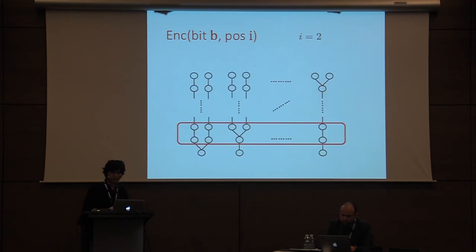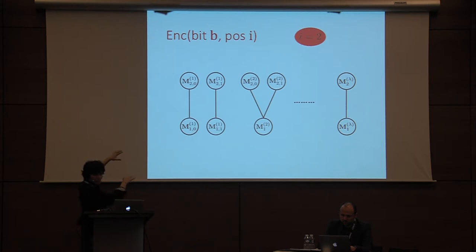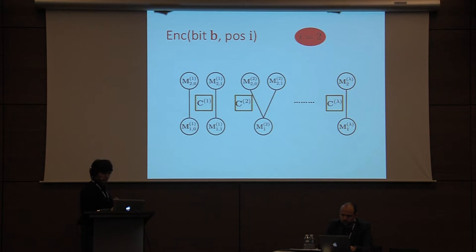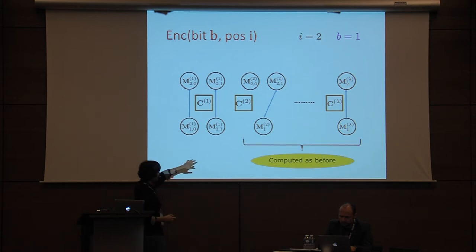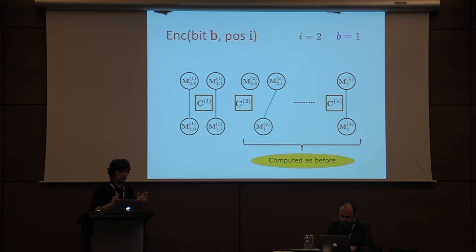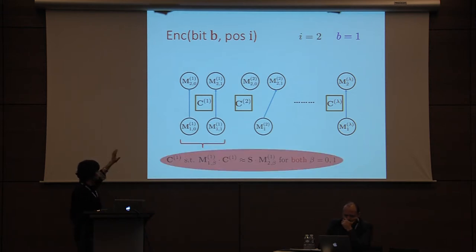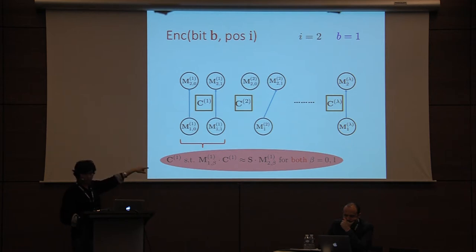For position two, we focus on level one and level two matrices. We again want to output lambda short matrices C1 through C-lambda as part of the ciphertext. Suppose we want to encrypt bit B; we want the Ci matrices to encode the relation taking level-one matrices to level-two matrices via the indicated transitions. We compute lambda minus one short matrices C2 through C-lambda as before, but for C1, we want a common matrix such that it takes both level-one matrices in the first strand to their corresponding level-two matrices.